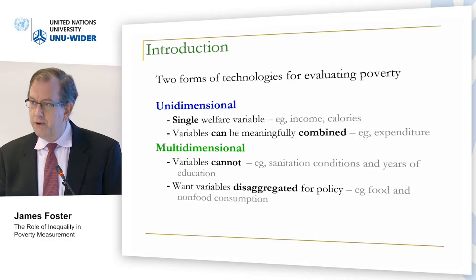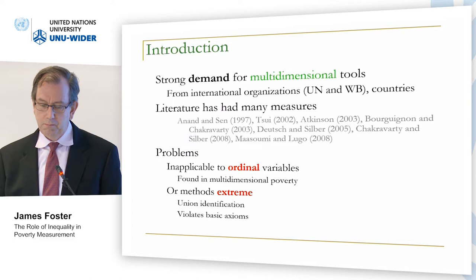The second form is multidimensional, where the variables of interest really can't be thrown together into one welfare variable. So sanitation conditions, education in Europe don't really work combined into one variable. Or alternatively, you may be able to combine them, but you just don't want to because you want to keep them separate for policy purposes. There's been a really strong demand for multidimensional tools recently from international organizations such as the UN and the World Bank.